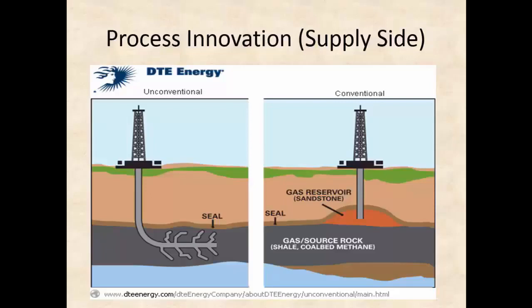But oil companies can increase profitability by trying to get more oil out of a given well or from a given investment of land, labor, and capital. There have been two huge innovations that have really come together in the last ten or so years: directional drilling and hydraulic fracturing. When combined, they can do with one drilling rig and one crew today what might have taken ten rigs and hundreds of workers in past decades.